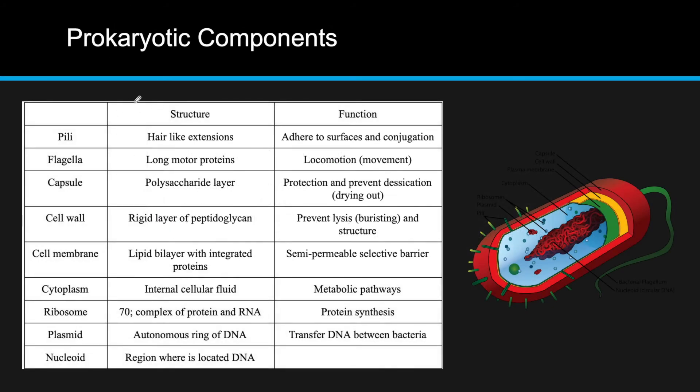So, now we're going to talk about prokaryotic components. So, now when we look here, you'll see that another picture of a whole prokaryotic cell. On the outside, you'll notice pili, which are just hair-like extensions, which adhere to conjugation and adhere to surfaces and assist in conjugation. This long tail-like thing is called a flagella, and what it does is it uses long motor-like proteins in order to move. It's worth noting that locomotion is the process of moving.